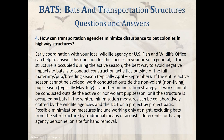Question 4: How can transportation agencies minimize disturbance to bat colonies in highway structures? Early coordination with your local wildlife agency or U.S. Fish and Wildlife Office can help answer this question. In general, if the structure is occupied during the active season, the best way to avoid negative impact is to conduct construction activities outside of the full maternity and pup-rearing season, typically April to September. If the entire active season cannot be avoided, working outside the non-volant pup season, typically May to July, is another minimization strategy. If work cannot be conducted outside these windows, minimization measures can be collaboratively crafted by wildlife agencies and the DOT on a project-by-project basis, and may include working only at night, excluding bats by traditional means or acoustic deterrence, or having agency personnel on site for hand removal.